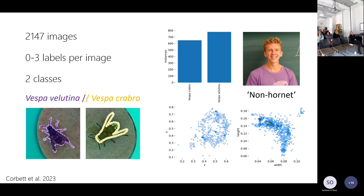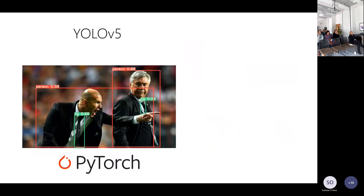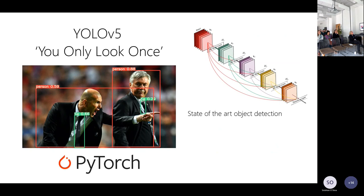We had Andy Corbett from the IDSAI at the Streatham campus bringing the data science expertise and model-building expertise to help make this a reality. We were fortunate to have a small seed corn grant with the IDSAI for a six-month project to develop the system. What we used as a baseline architecture was the YOLO series of models — YOLO version 5 — which stands for 'You Only Look Once,' and it's a state-of-the-art object detection model that transfers learning from pre-trained object models.